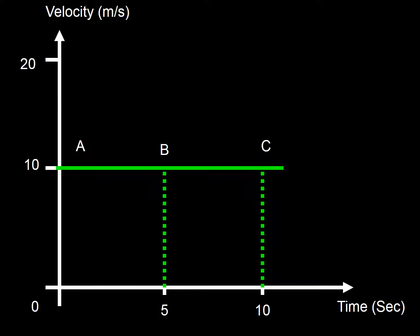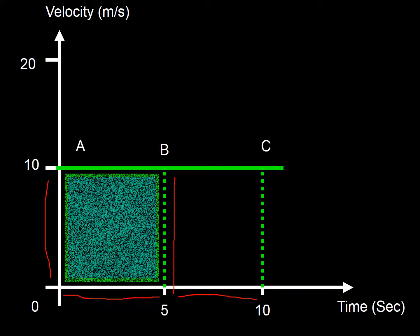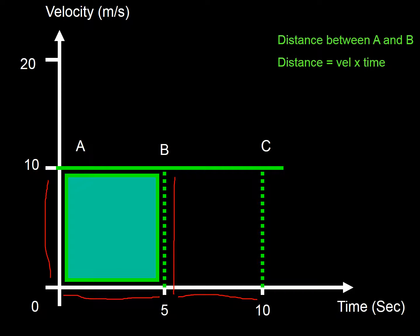The same applies here — the area of this rectangle is 5 times 10, giving 50 meters. Another rectangle: 10 by 5, also 50 meters. So on a velocity-time graph, the distance traveled equals the area of the rectangle.